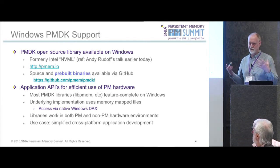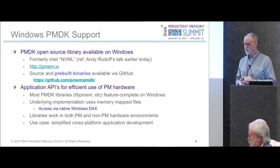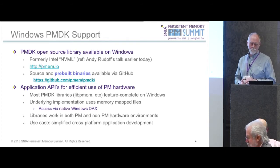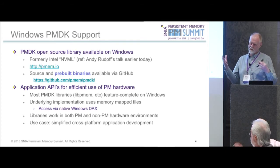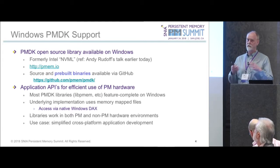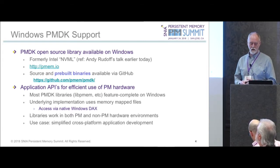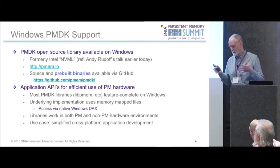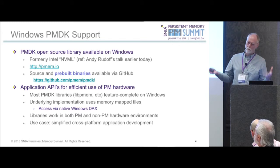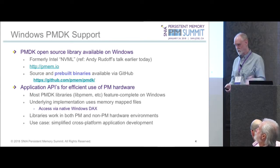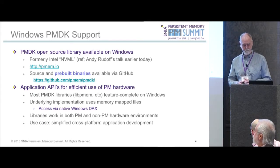The PMDK uses Windows stacks to map the files and calls the Windows RTL runtime library, which Neil mentioned earlier — highly efficient. They work in both PM and non-PM hardware environments, so you can play with them even without a PM device. The use case is simplified cross-platform application development. The PMDK is today's best example of portable, persistent, memory-aware APIs, and we want them to run everywhere — on Windows just the same way they run on Linux.